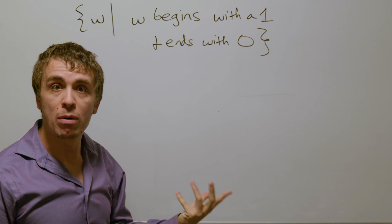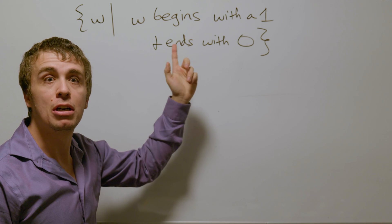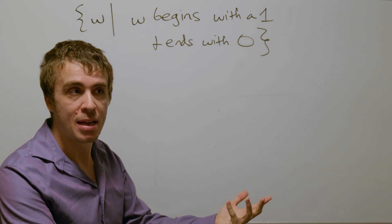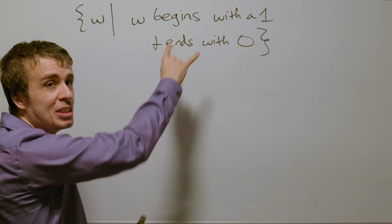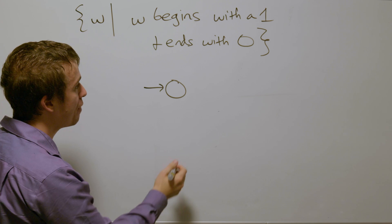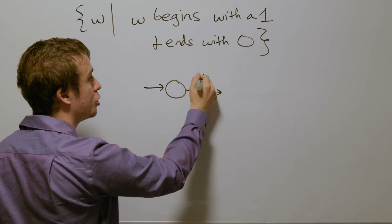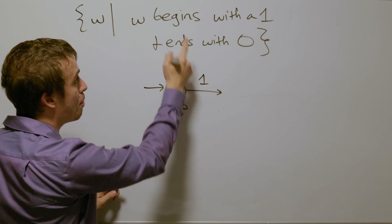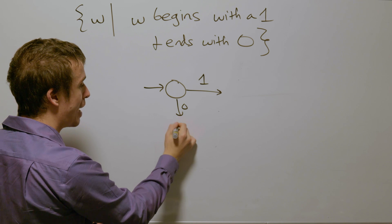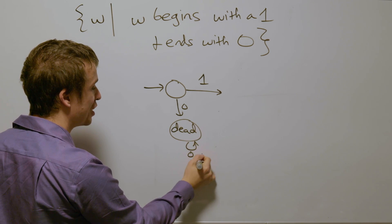So how would we approach a problem like this? We should focus on the strings that are in the language. Notice that it says begins with the one. So that means if we're going to start making a DFA for this, we have to have the outgoing transition start with a one, because if it starts with a zero, that breaks the condition of the language and we would have to go to a dead state because we can never accept at that point.